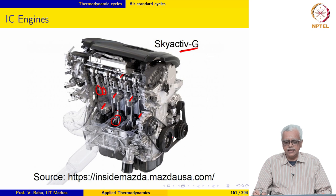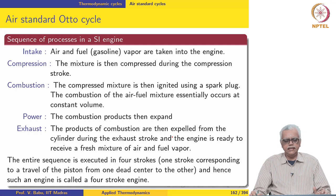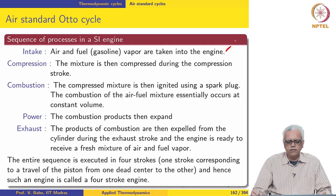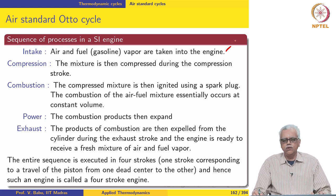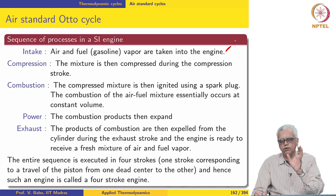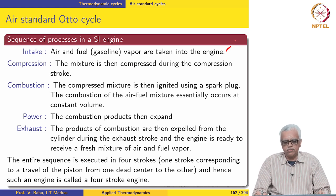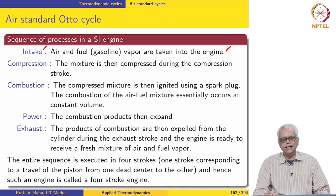This is a gasoline engine and it executes the following sequence of processes. Air and fuel — specifically gasoline vapour — are taken into the engine. The fuel has to be in vapour form when it is taken in. We focus on one cylinder and look at the sequence of processes executed there, which occurs during the intake stroke.